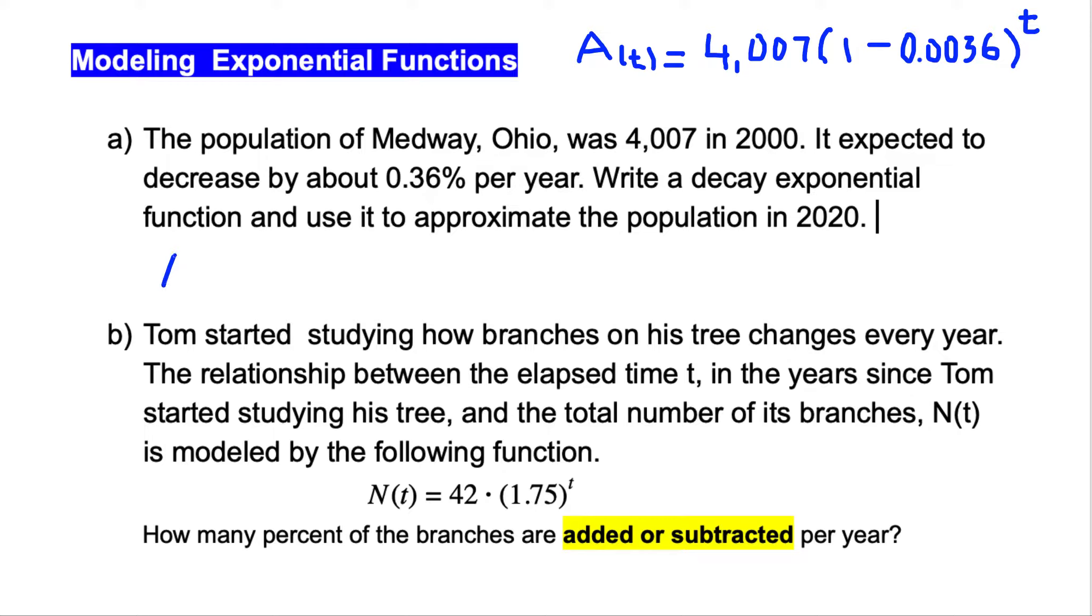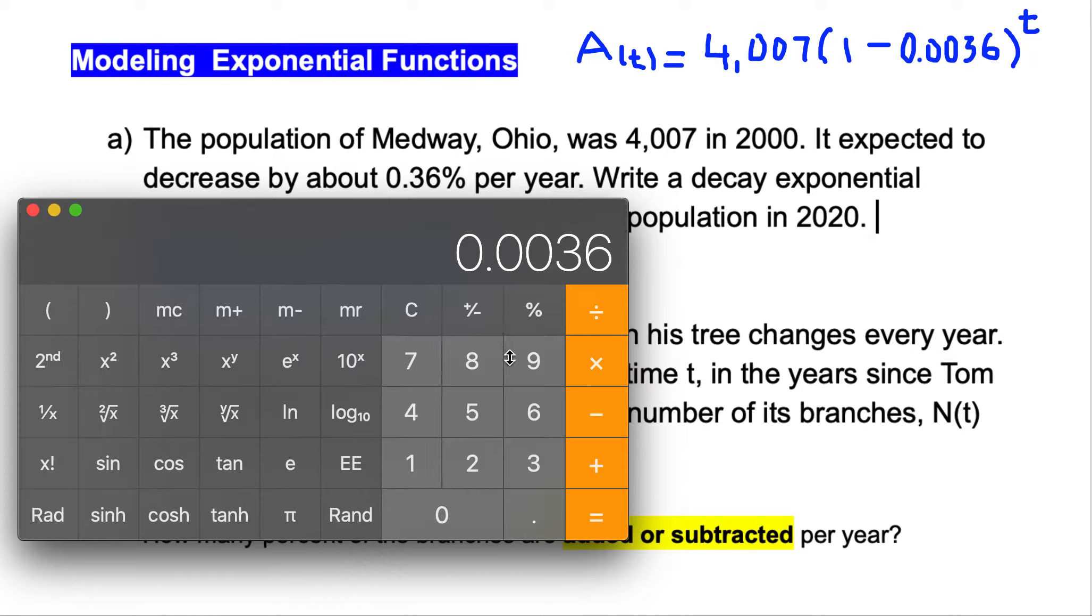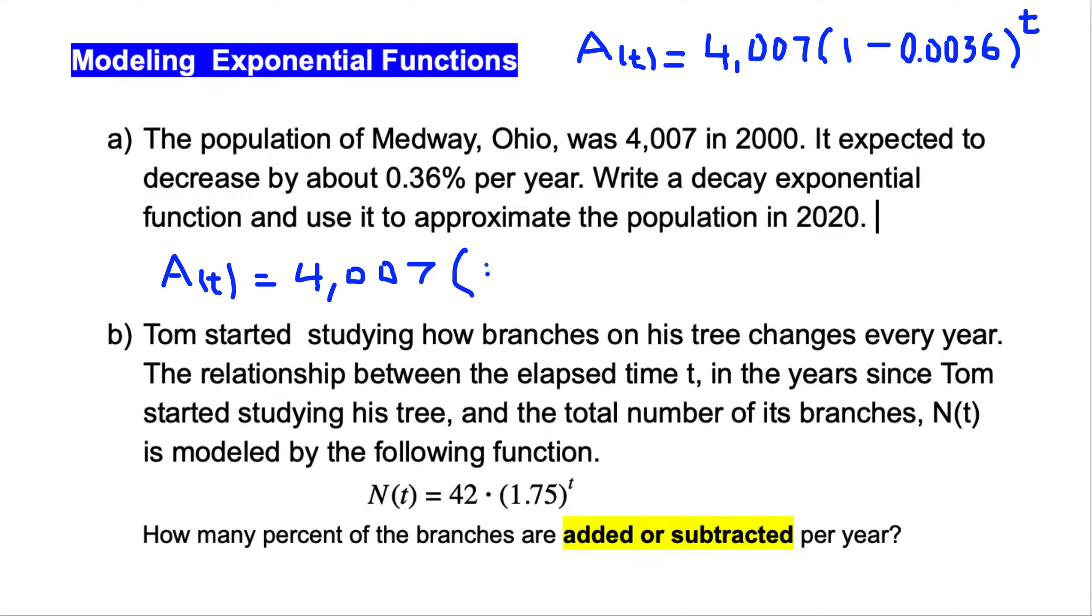If we want to make an exponential function, we can make it this way. A of t equals 4,007, this initial value represents how many people there were initially. And here 1 minus r, we find the factor b. Let's calculate: 1 minus 0.0036, and we get 0.9964 in exponent t.